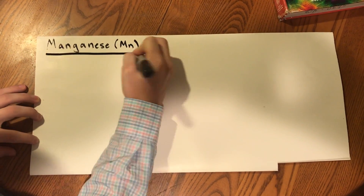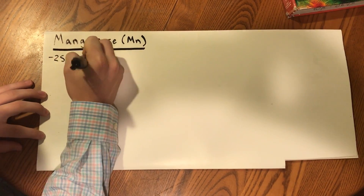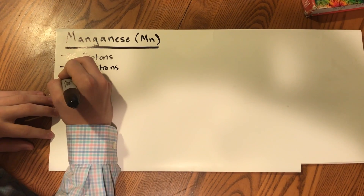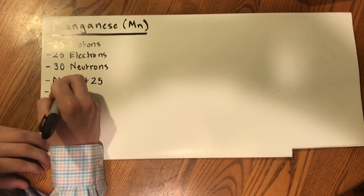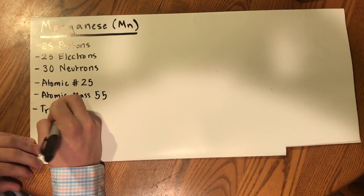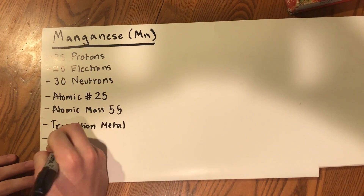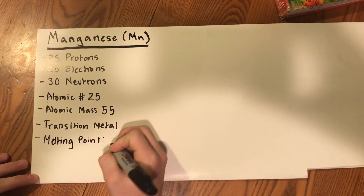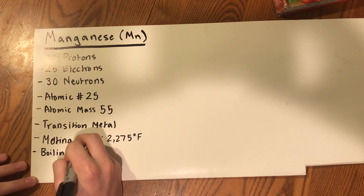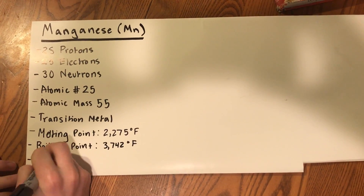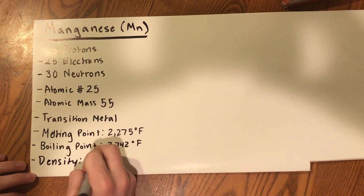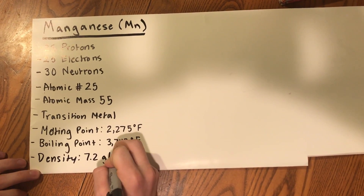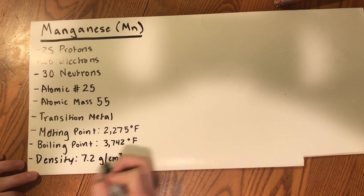Manganese has the abbreviation Mn. It has 25 protons, 25 electrons, 30 neutrons, an atomic number of 25, and an atomic mass of 55. It's a transition metal that has a melting point of 2,275 degrees Fahrenheit, a boiling point of 3,742 degrees Fahrenheit, and a density of 7.2 grams per centimeters cubed.